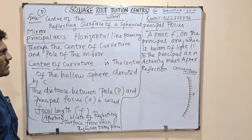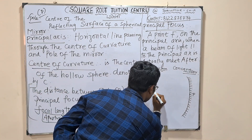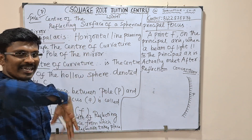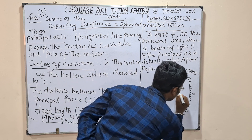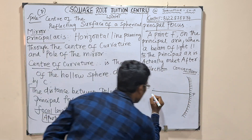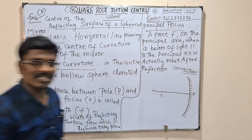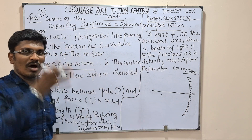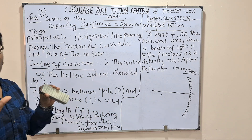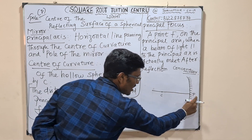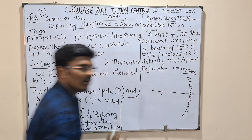The second point is the principal axis — the horizontal line passing through the center of curvature. The center of curvature is the center of the sphere. The dot between is the geometric center, which is called the Pole. Next is the center of curvature.